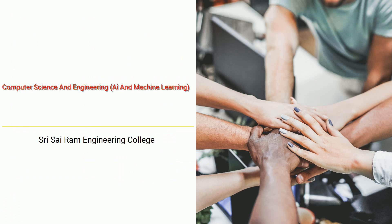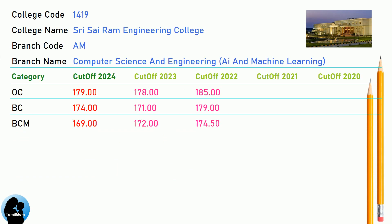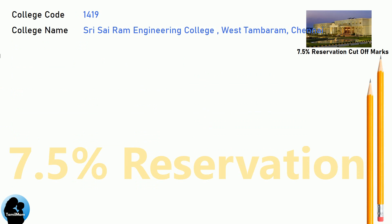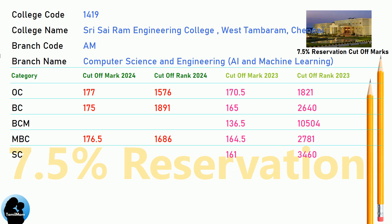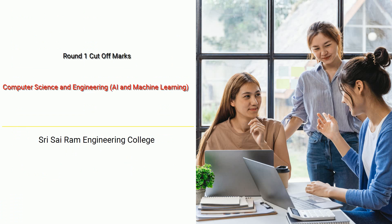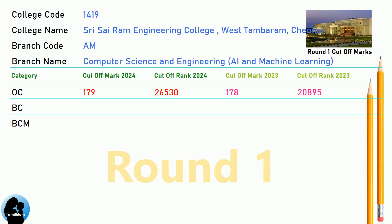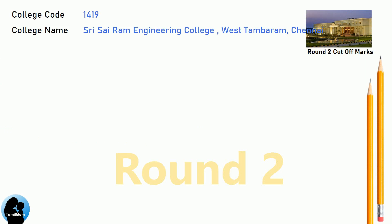DNA Cut-off for Shri Sairam Engineering College in Computer Science and Engineering, AI and Machine Learning. DNA 7.5 Reservation Cut-off for Shri Sairam Engineering College in Computer Science and Engineering, AI and Machine Learning. DNA Round 1 Cut-off for Shri Sairam Engineering College in Computer Science and Engineering, AI and Machine Learning. DNA Round 2 Cut-off for Shri Sairam Engineering College in Computer Science and Engineering, AI and Machine Learning.